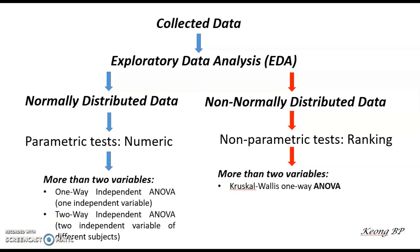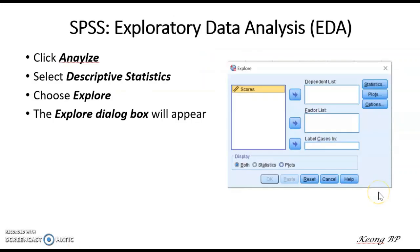If your data is not normally distributed and your test variable involves more than two groups, the test you should conduct is the Kruskal-Wallis one-way ANOVA. Now, how are we going to conduct the EDA test?